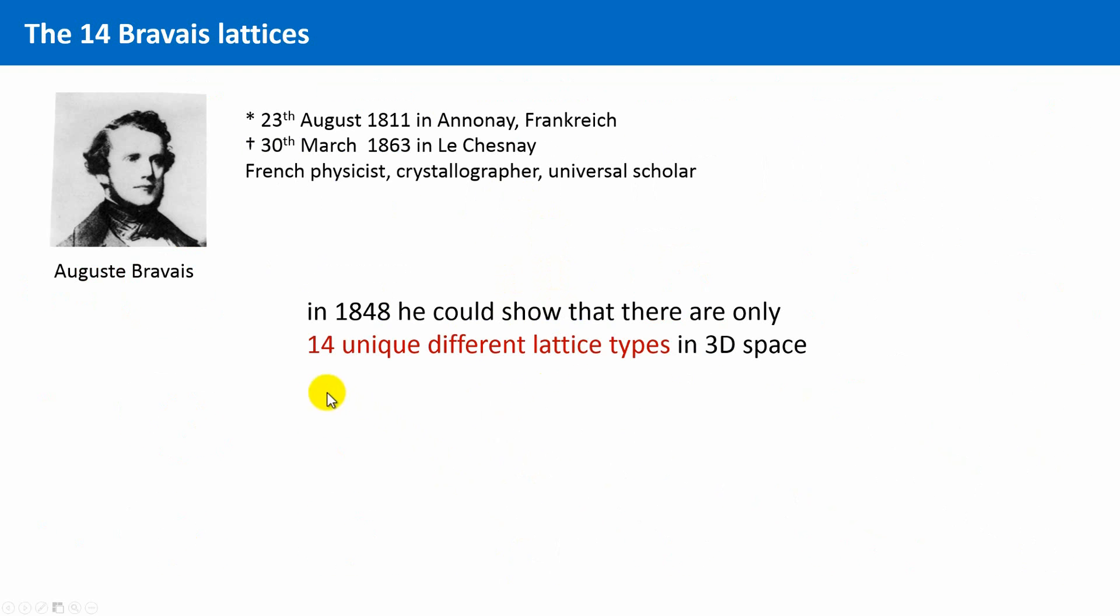It was Auguste Bravais, a French physicist, crystallographer, and also universal scholar, who could show in 1848 that only 14 principally different lattice types exist in three dimensions.